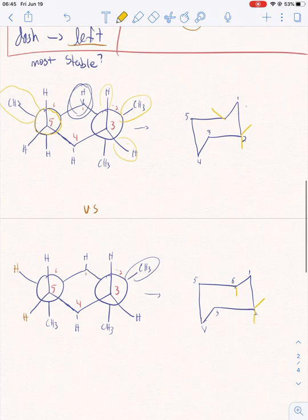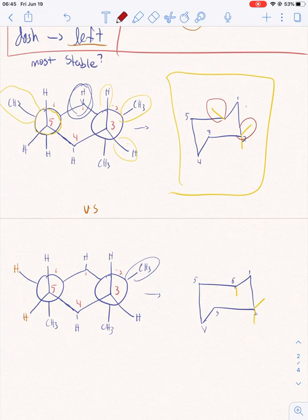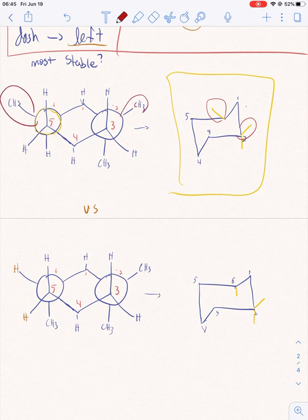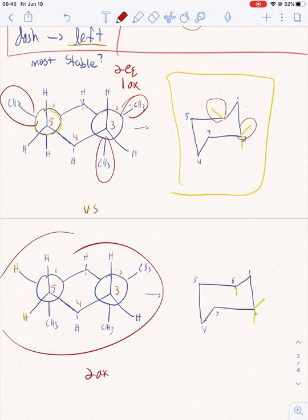So now we can clearly see the most stable structure is this one because it has two equatorial groups. But you don't even need to turn these into chairs to see what's more stable because you can just look at the substituents. If it's pointing up at an angle, it's equatorial. If it's an angle, it's equatorial. If it's straight up and down, it's axial. So you don't even have to turn it to a chair. You just know this one has two equatorial and one axial. This one has two axial and one equatorial. It's all about what's diagonal or straight up and down.